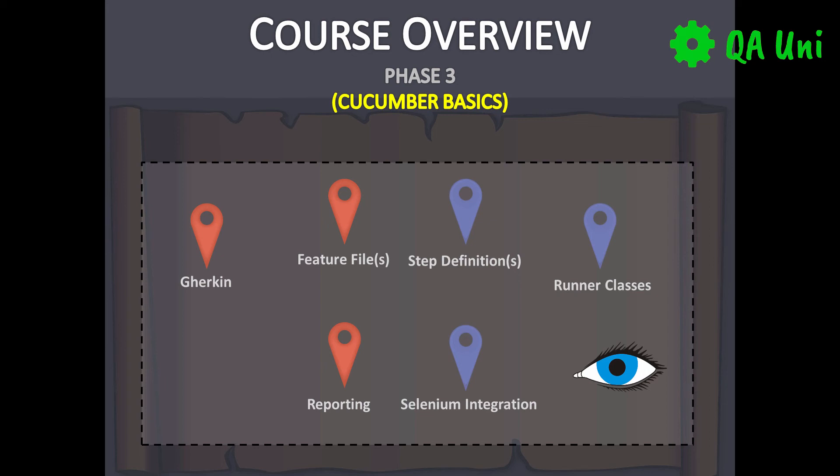This is going to be a very important module because it purely focuses on the key components of Cucumber. To recap: we're going to look at Gherkin, which is a language used to create feature files. We're then going to link Selenium code with our feature files by creating a step definition class. And then finally, we're going to create a runner class which will enable us to develop advanced reports. Let's get started.